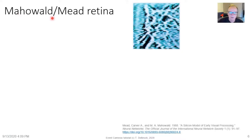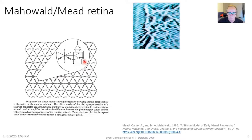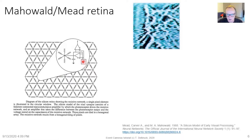Let's look at the Misha Mahowald–Carver Mead retina that made the cover of Scientific American. It has a photoreceptor driving a transconductance amplifier, which drives a node of a 2D resistive network. Inside the pixel you take the difference between the resistive network and the photoreceptor. The resistive network models lateral connections — a single pixel element shown in a circular window. The silicon model of the triad synapse consists of a follower-connected transconductance amplifier driving a resistive network through transverse and lateral conductance, with a final transconductance amplifier taking the difference.